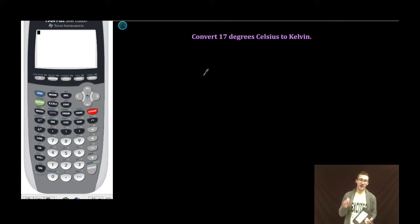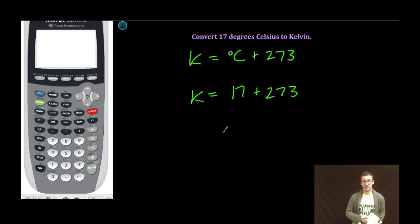All right, one last example. This time converting the other direction. The formula is the same: Kelvin temperature is equal to degrees Celsius plus 273. This time we're given degrees Celsius. All we have to do is add 273, so my temperature in Kelvin is going to be 290.